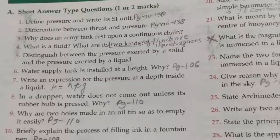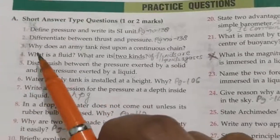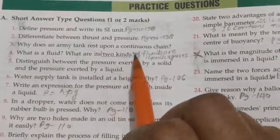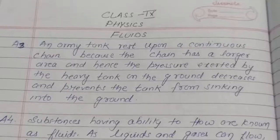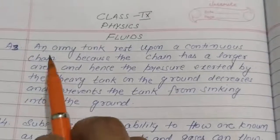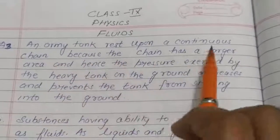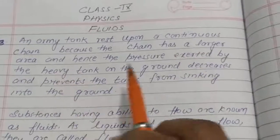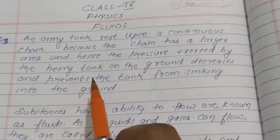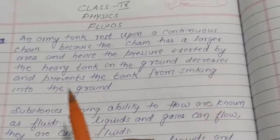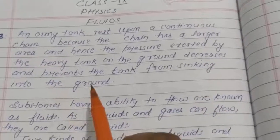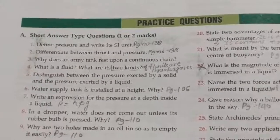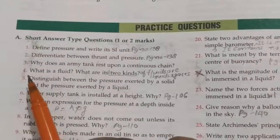Question number three: why does an army tank rest upon a continuous chain? Answer: an army tank rests upon a continuous chain because the chain has a larger area, and hence the pressure exerted by the heavy tank on the ground decreases and prevents the tank from sinking into the ground.